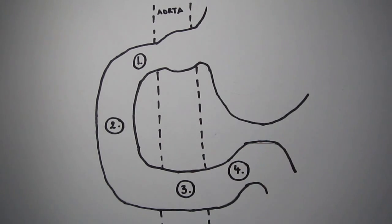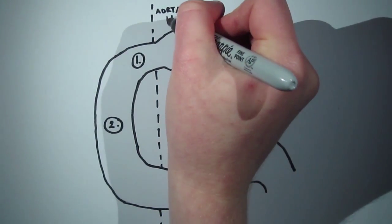The arterial supply to the duodenum arises from both the celiac trunk and the superior mesenteric artery.